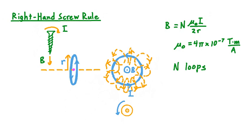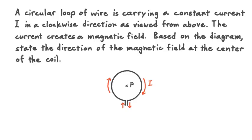Now that we know about solving for field magnitude as well as direction, let's get some practice through an example. A circular loop of wire is carrying a constant current I in a clockwise direction as viewed from above. The current creates a magnetic field. Based on the diagram, state the direction of the magnetic field at the center of the coil, at point P.